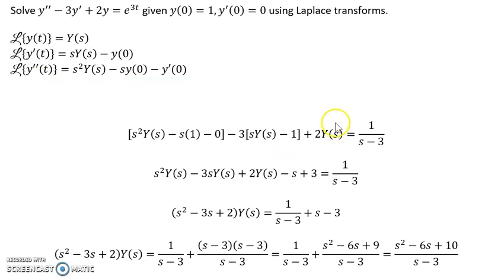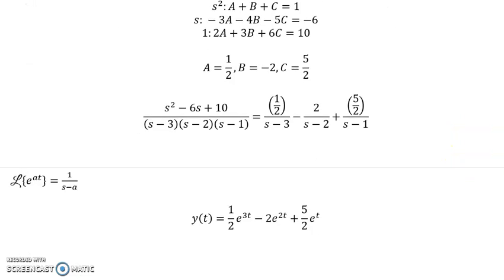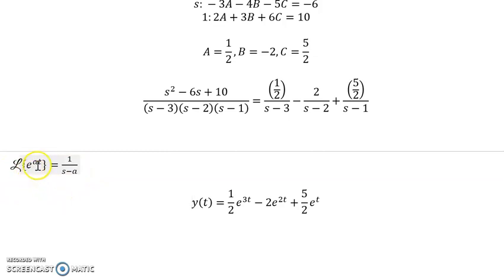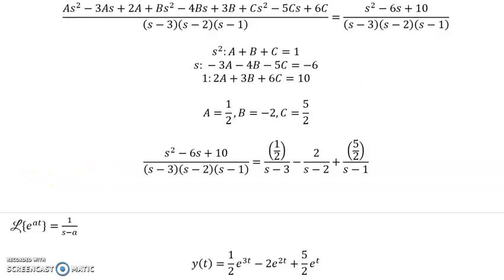The other transformation that we're going to need is the exponential function. I have that one written down here because we're going to use it several times. This is just one of the basic formulas: e^(at) becomes 1 over (s minus a).